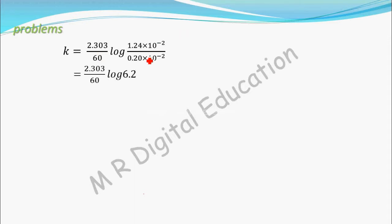When you divide these two you will get 6.2, and log of 6.2. And when you simplify this whole thing, you will get rate constant as 0.0304 per minute.